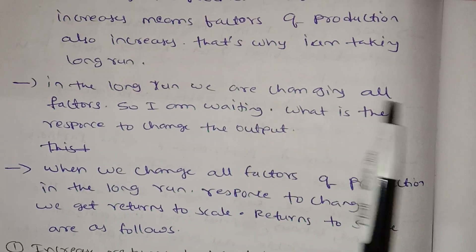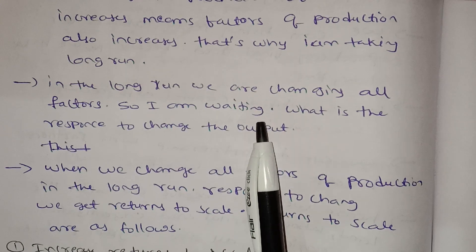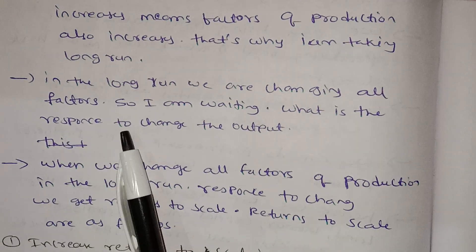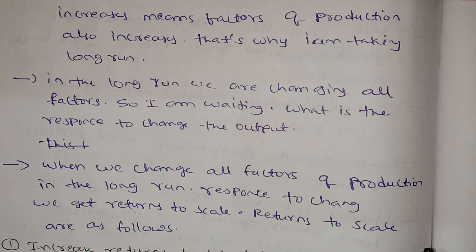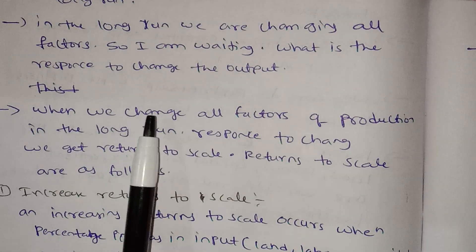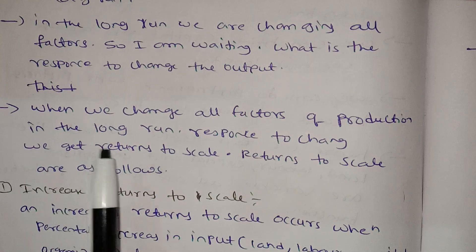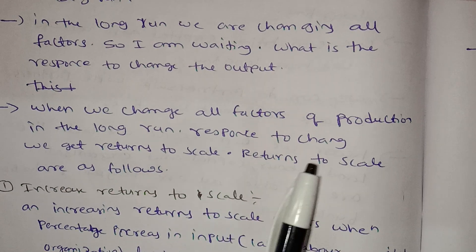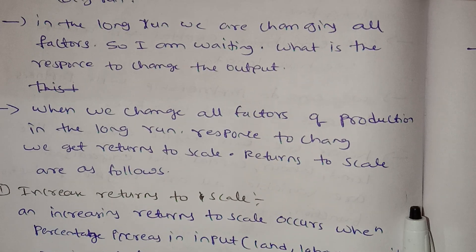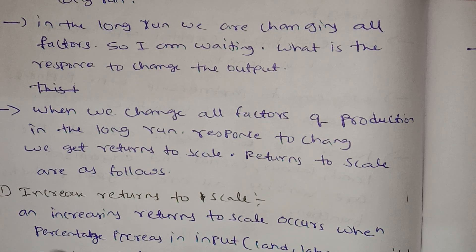In the long run, we are changing all factors. What is the response to change in the output? So we are changing all factors in the long run. In response to that change, we get return to scale. Return to scale are as follows — if we are changing the input, we will see the change in the output.